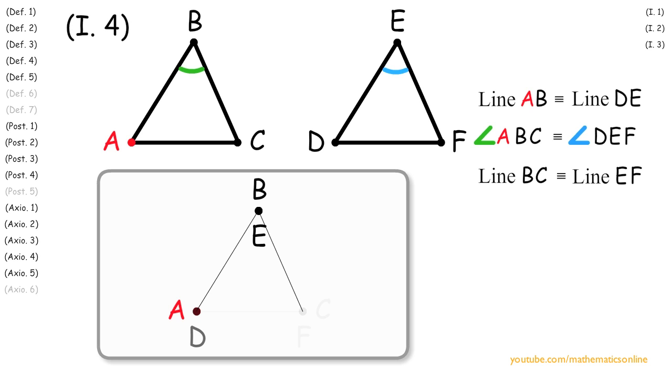Now since line BC is congruent to line EF, then we know that points C and F must coincide.